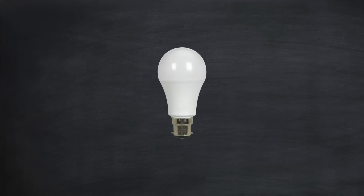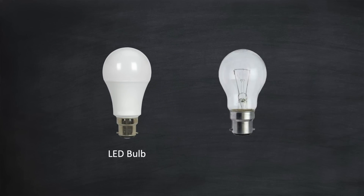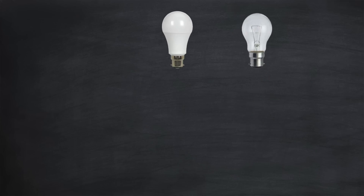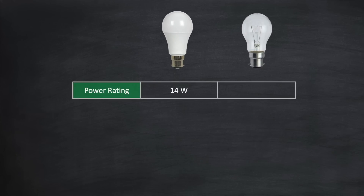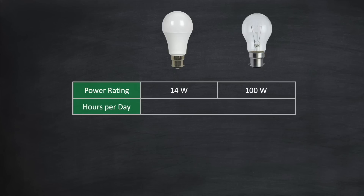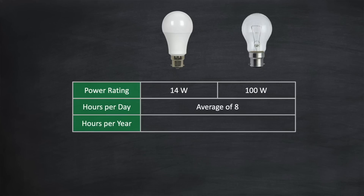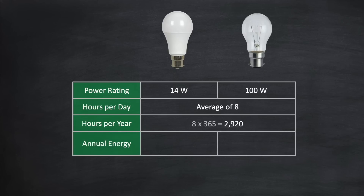Let's look at another common electrical appliance: the electric light bulb. We'll look at two types — an LED bulb, which is the most common type in use today, and an older incandescent bulb which many of you might still be using. An LED bulb typically has a power rating of 14 watts, which produces the same amount of light as a 100 watt incandescent bulb. If we assume each bulb is used for an average of eight hours a day, that works out at 2,920 hours per year. For the LED bulb, that's 14 watts times 2,920, which works out to 40.9 kilowatt hours.